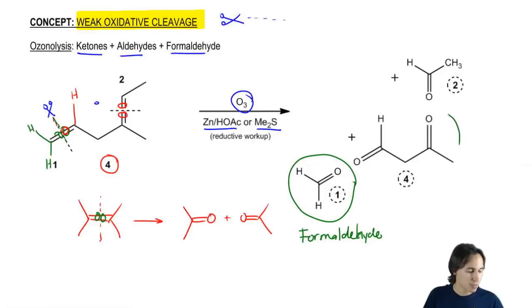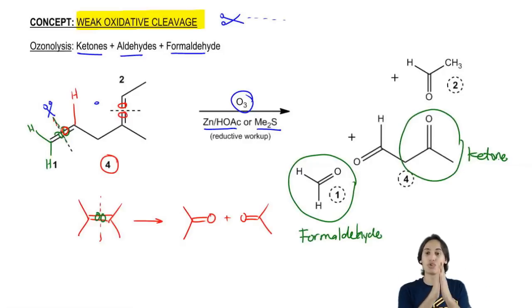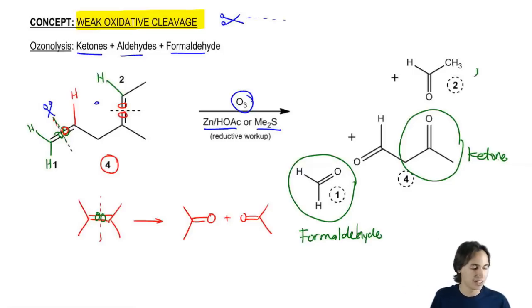Now notice that this part would become a ketone. Why is that? Because this double bond was already inside of two other carbon chains. There was already two carbon chains surrounding it. There was no H's coming directly off of it, so it has to be a ketone. However, the top part of the double bond had an H coming off of it. So what that means is that it's still going to have that H and this is going to be an aldehyde.